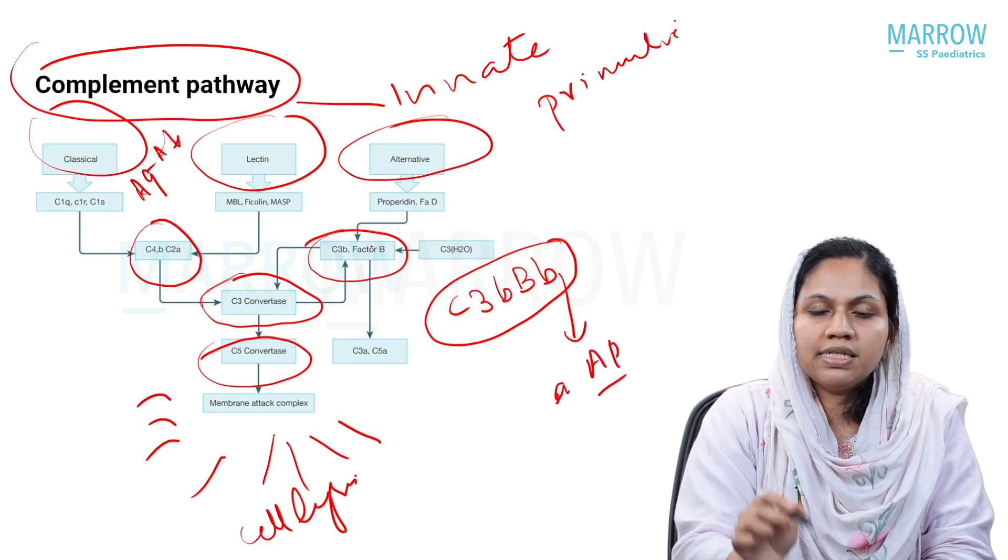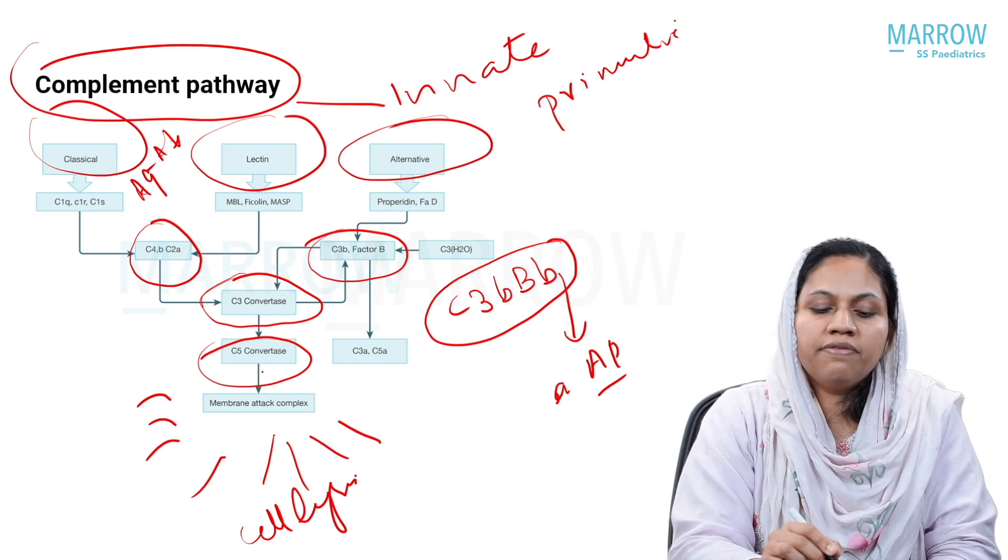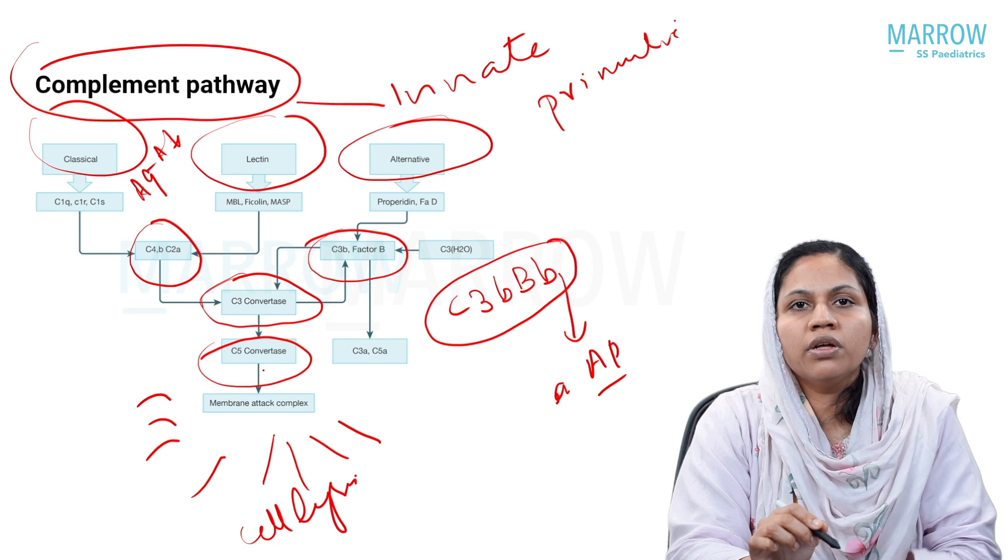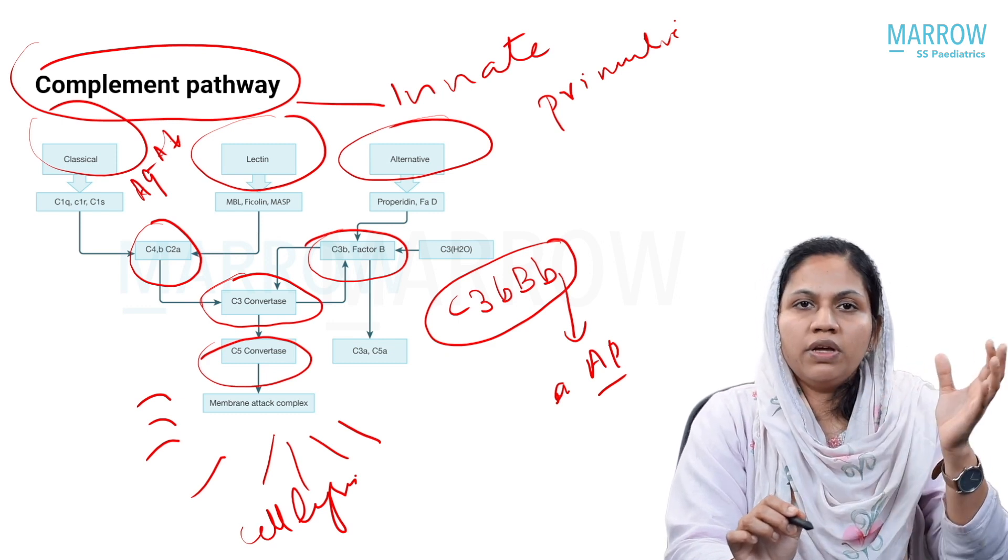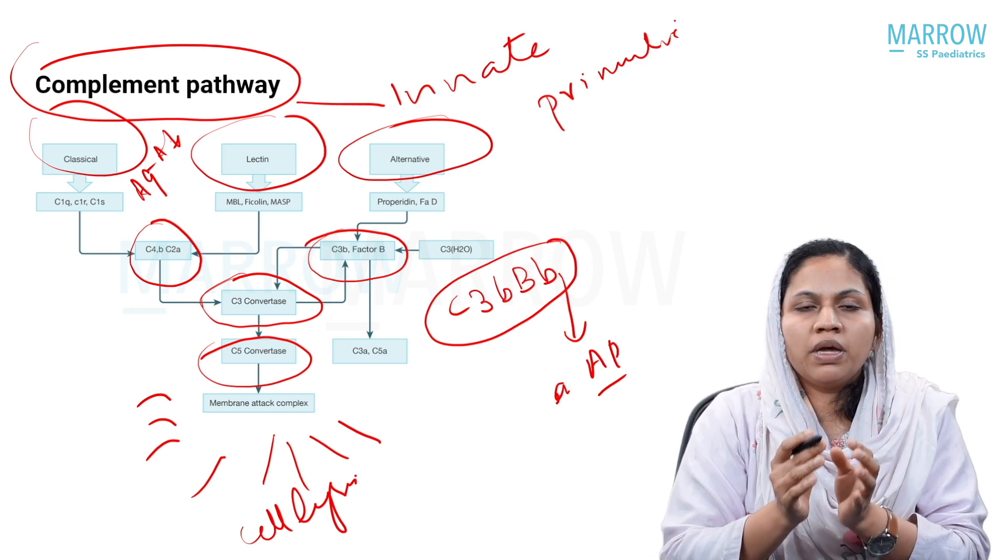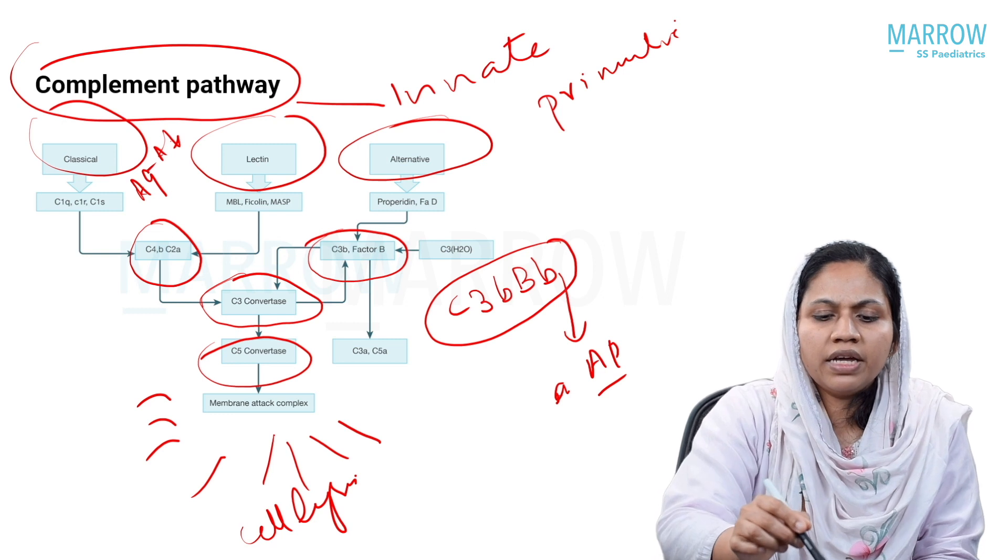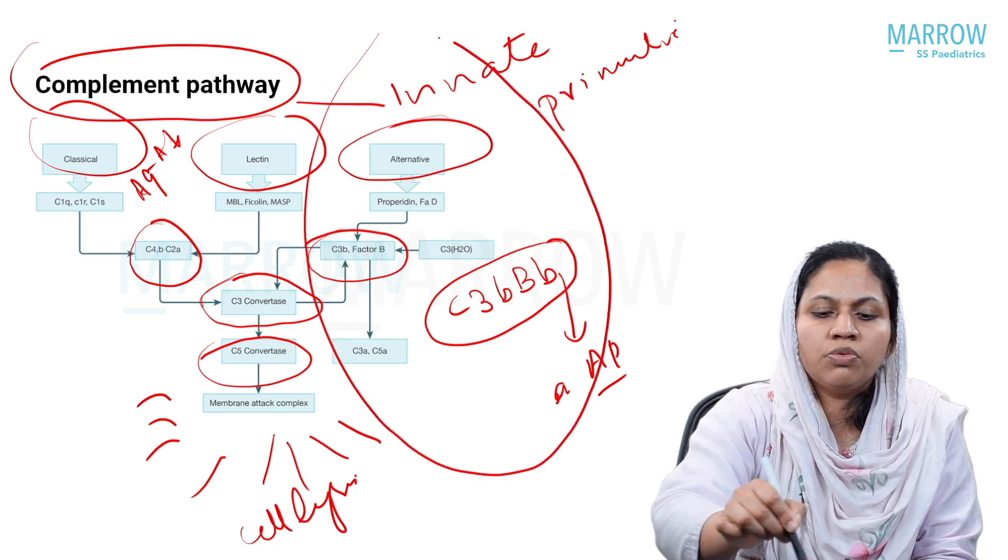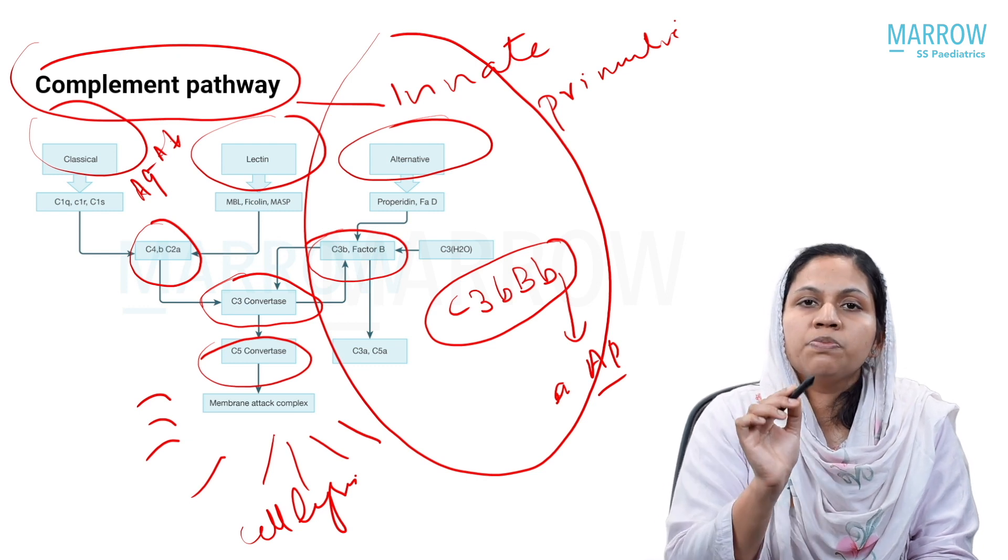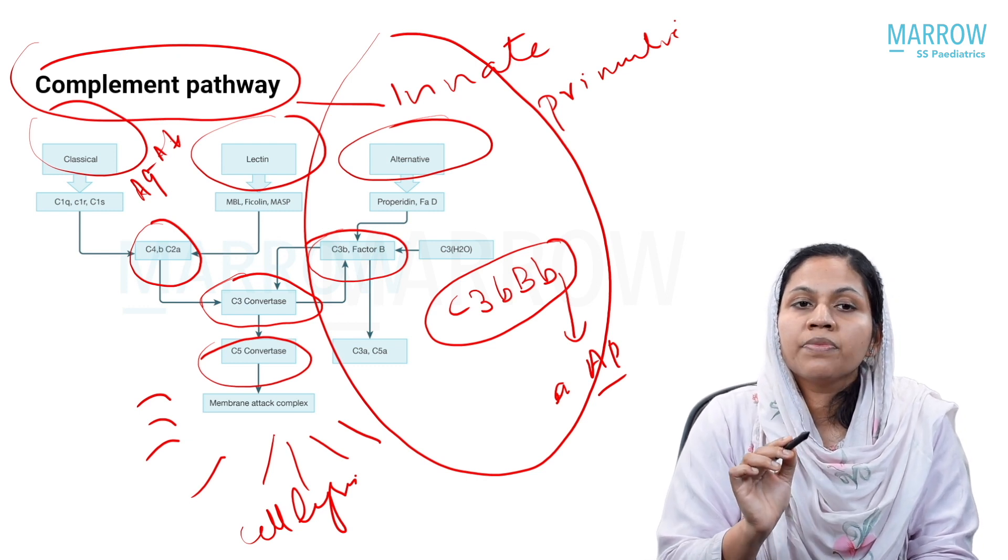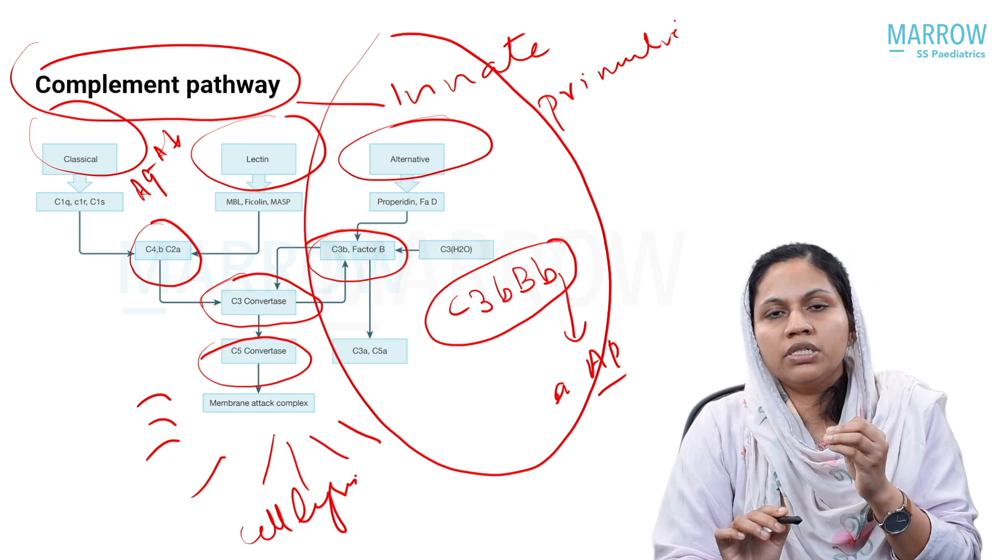And the next being C5 convertase that is common for both pathways. This is somewhat similar to our coagulation pathway where you have intrinsic pathway, extrinsic pathway, and then culminating in the common pathway. So our area of interest is the alternate pathway because this is the most primitive and this pathway is a constitutively active pathway.